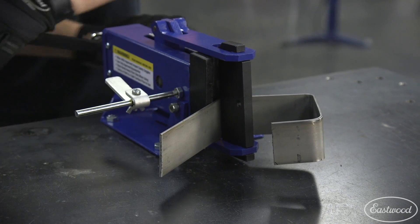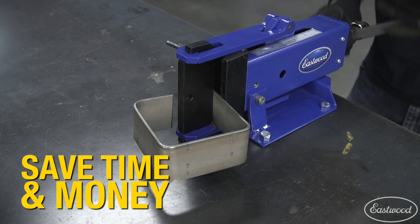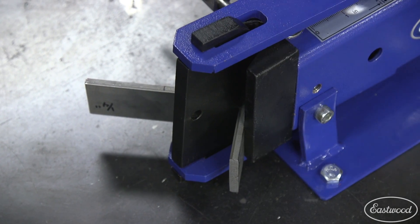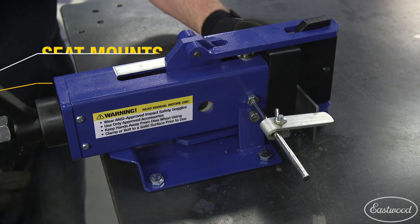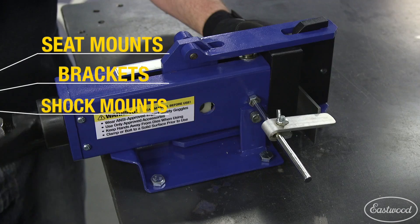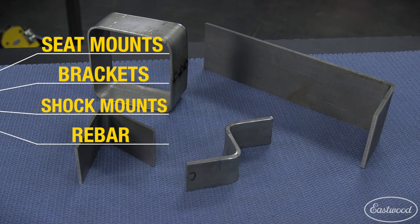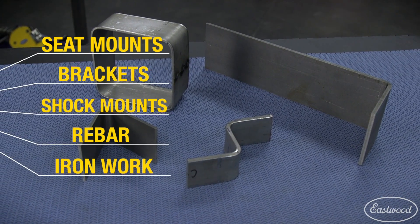Plus, when you fab metal yourself, the tool quickly pays for itself. The Eastwood 4-inch metal bender is great for making your own seat mounts, brackets, shock mounts, or even for bending rebar or doing ornamental iron work.